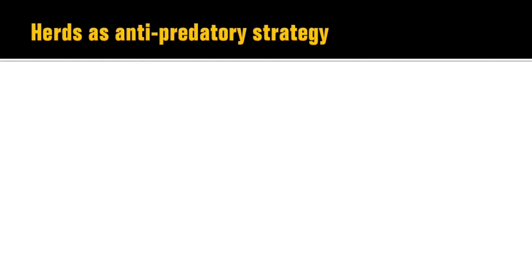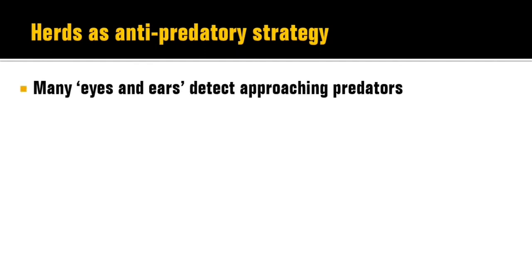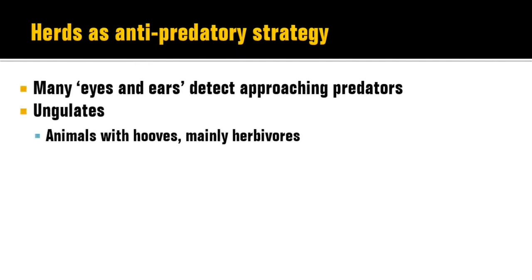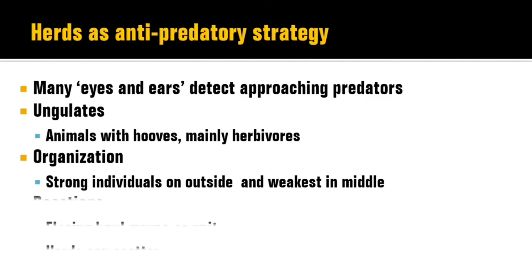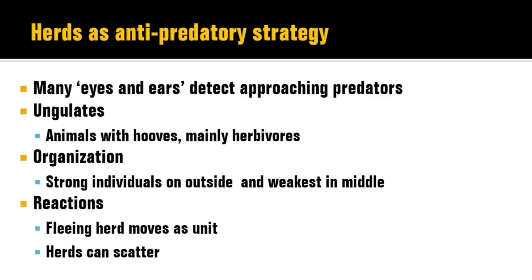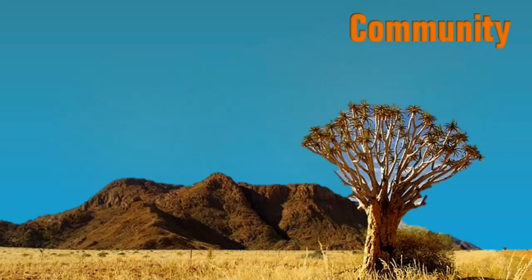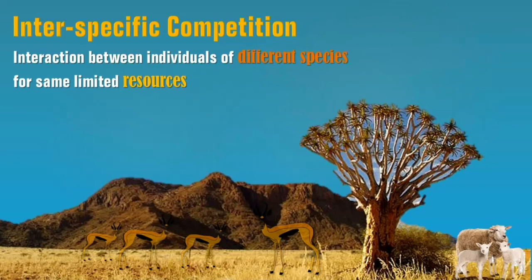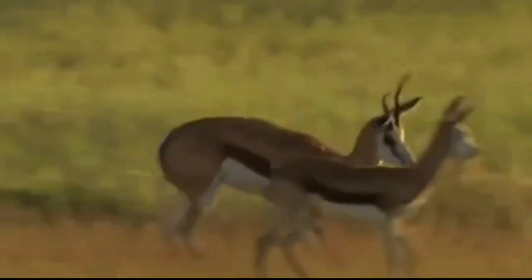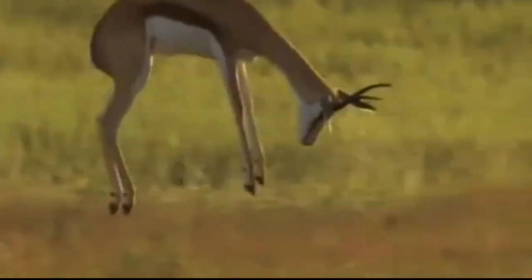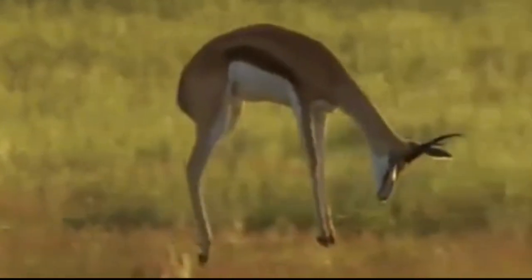In order to survive, the prey also needs certain strategies to help them, including herding, good camouflage, warning coloration — though not in the Springbok — and secreting poisonous substances — though again not in the Springbok. They do use herds as an anti-predatory strategy, where being organized protects them. Strong individuals are found on the outside and weaker ones in the middle, and when they have to flee, they move as a unit. Human-wildlife conflict occurs in areas where humans and wildlife occupy the same area.